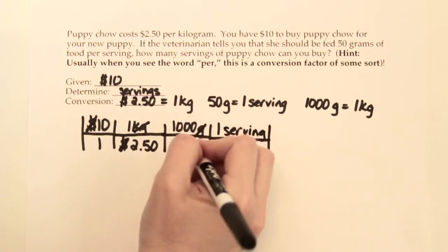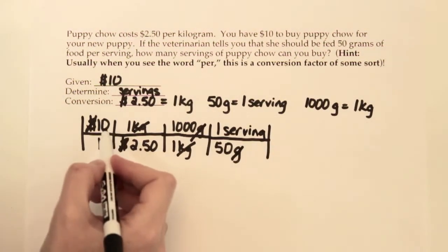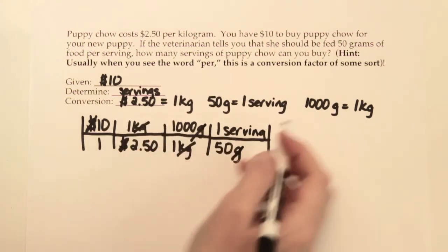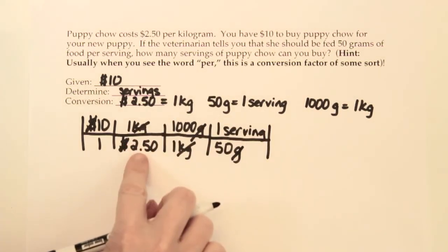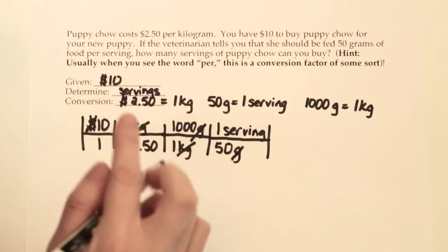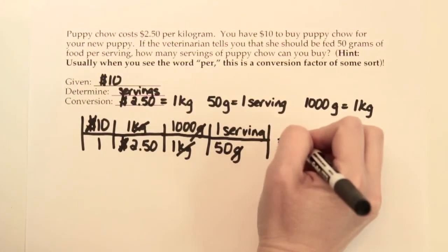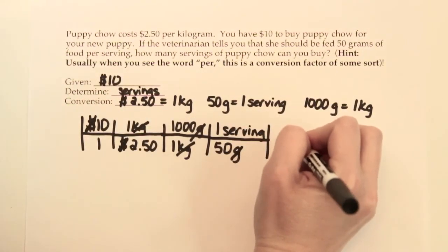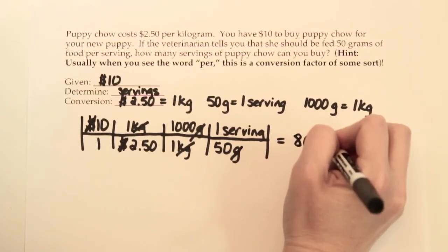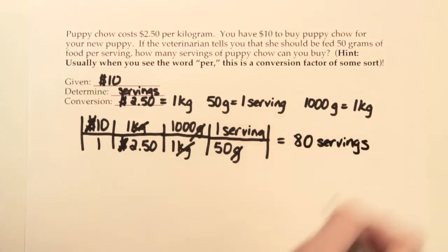Grams and grams cancel out. Then we multiply 10 times 1 times 1,000 on the top, and 1 times 2.50 times 1 times 50 on the bottom. Simplify — after you multiply and do a little division, your answer should turn out to be 80 servings worth of food.